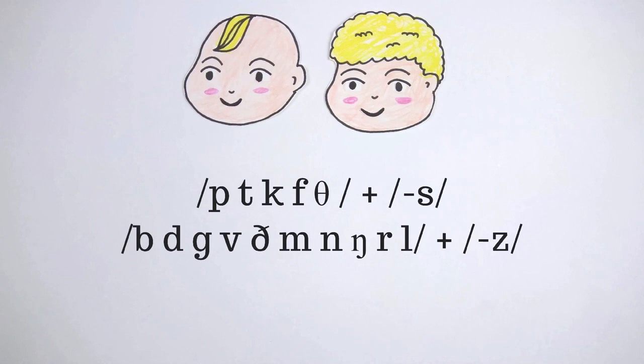Preschoolers and first-graders successfully generated the allomorphs of plural morphemes S and Z to their phonological conditions in nonce words. That is, the plural form of WUG was WUGS. They exhibited the knowledge of morpheme rules.